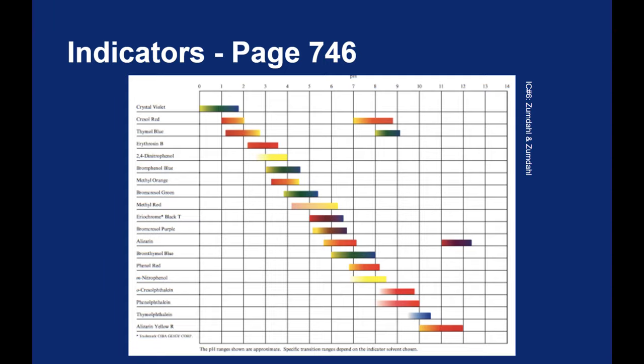The reason we use phenolphthalein so commonly as an indicator is because a lot of these other indicators are fairly carcinogenic. And phenolphthalein, though not pristine in itself, is a safer option than a lot of these other indicators.